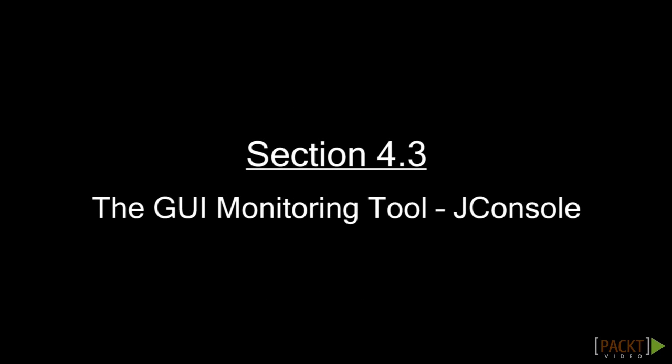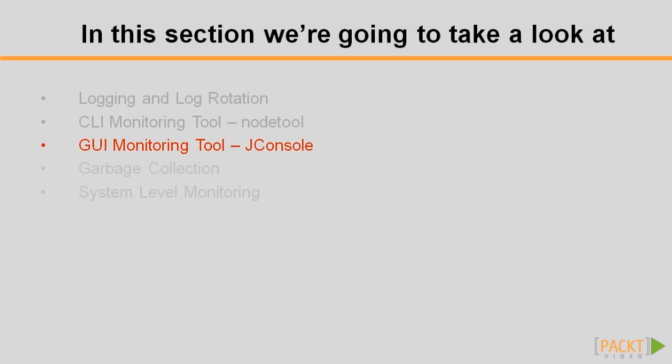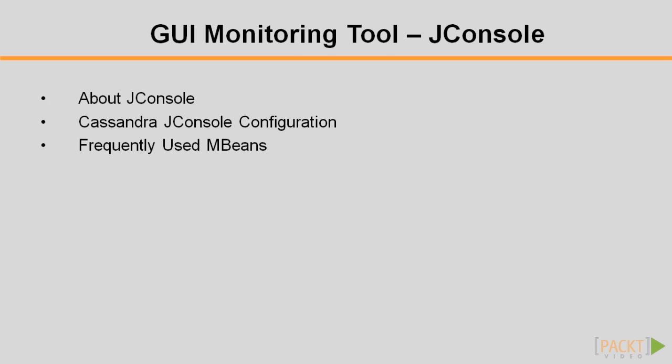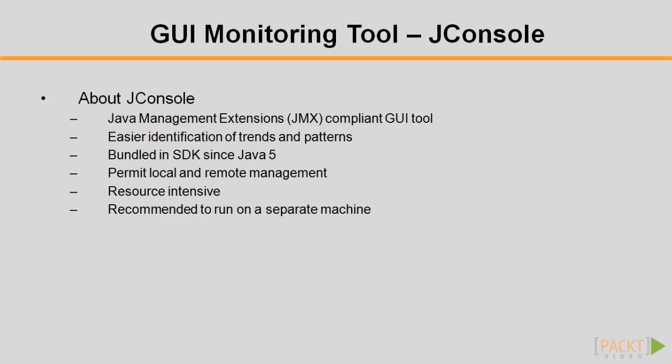In this video, I'm going to show you a GUI monitoring and management tool for Cassandra called JConsole. It isn't built specifically for Cassandra, but with Cassandra's Java Management Extensions, or JMX support, it becomes a one-stop shop for maintenance and management. JConsole is a JMX compliant GUI tool. It has the advantage of easier identification of trends and patterns, and it's bundled in Java SDK since version 5, and so it's free of charge.